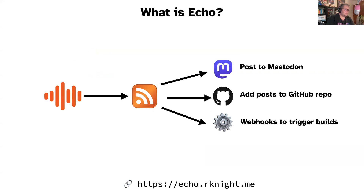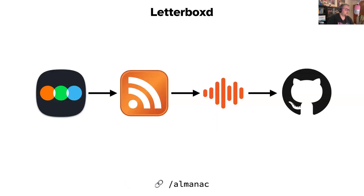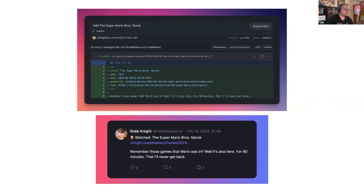So this is what I'm using for a lot of the stuff I'm pulling in. An example: I use Letterboxd, the service for reviewing movies. I post a review — they do have an API but you can't get access to it — so I use the RSS feed. My reviews go in there, Echo picks that up and writes the file to GitHub directly, then the site gets triggered to build. You can see here what one of the commits would look like, and then that goes to my site, which gets built. Echo will then pick that up from my site's RSS feed and post it to Mastodon — so we're sort of going around in circles a few times before it actually gets posted out and people can see it.